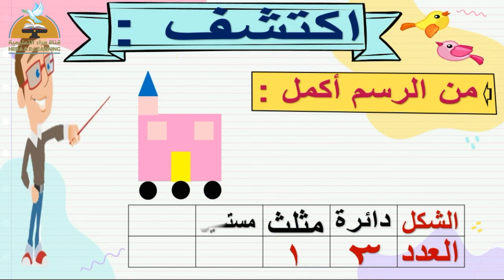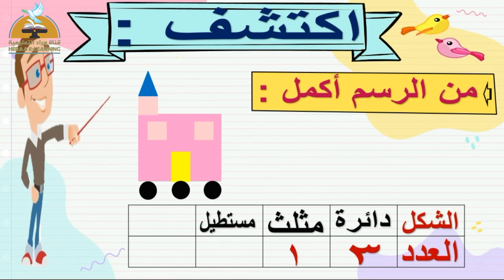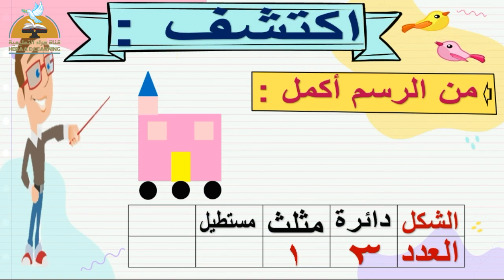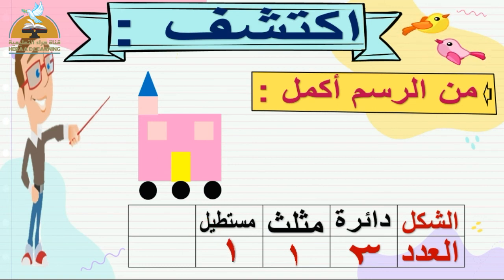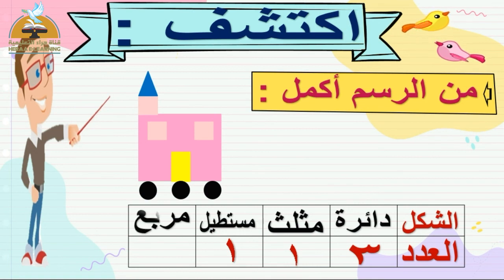يلا نشوف الشكل اللي وراه. المستطيل - تعال نعد مع بعض: فيه كام مستطيل؟ ده واحد بس باللون الأصفر. برافو عليك.